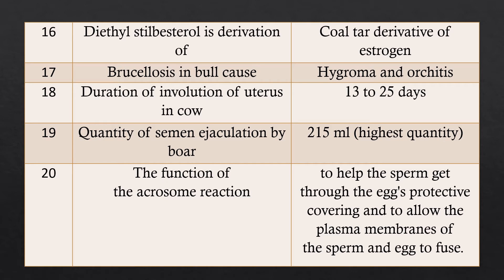Question 17: Symptoms of brucellosis in a bull? Answer: Hygroma and orchitis — inflammation of the testis — and accumulation of fluid in the cavity in front of the knee joint, which is called hygroma.